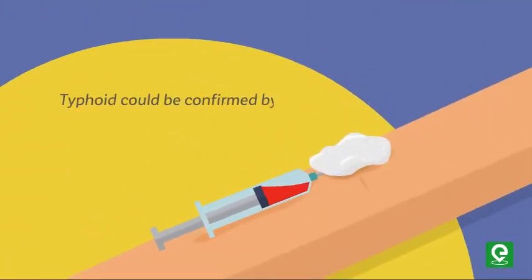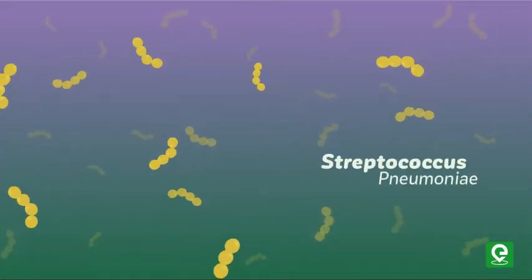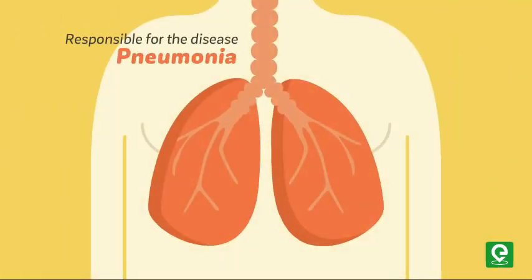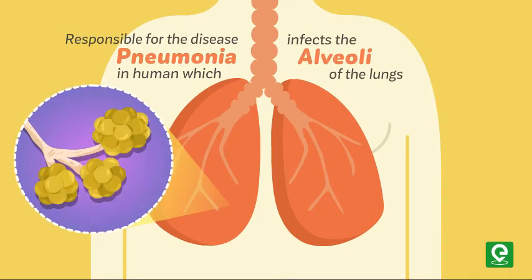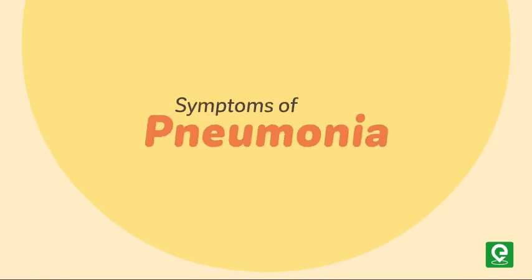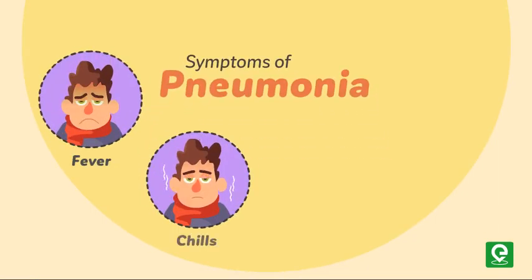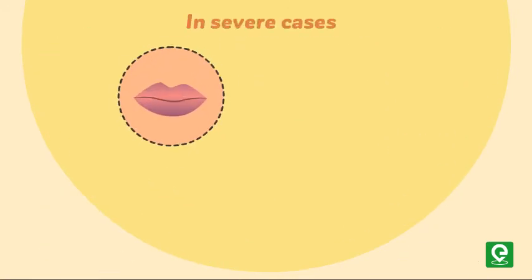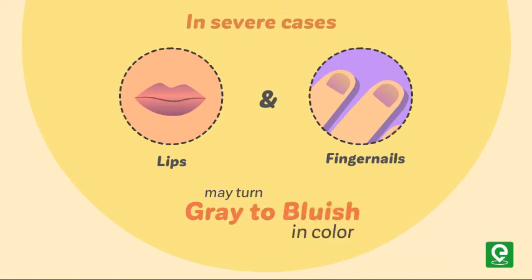Typhoid could be confirmed by a Widal test. Bacteria like Streptococcus pneumoniae and Haemophilus influenzae are responsible for the disease pneumonia in humans, which infects the alveoli of the lungs. As a result of the infection, the alveoli get filled with fluid, leading to severe problems in respiration. The symptoms of pneumonia include fever, chills, cough, and headache. In severe cases, the lips and fingernails may turn grey to bluish in colour.